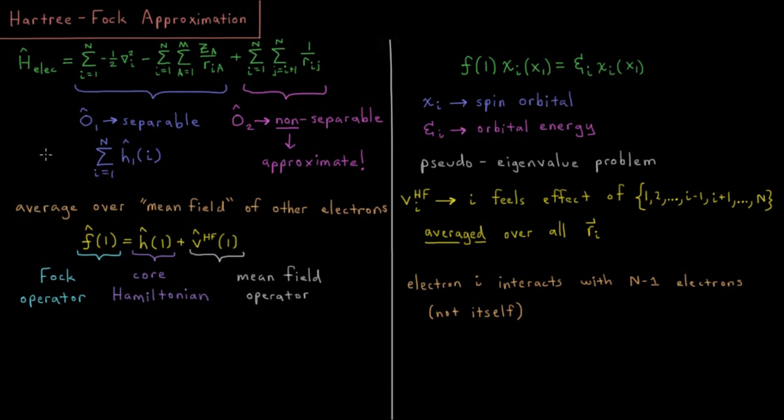Thus far, we've looked at our electronic Hamiltonian. We've already assumed the Born-Oppenheimer approximation. We're already looking at just electronic energies because our nuclei are assumed to be fixed classical point particles relative to our light, fast-moving electrons.